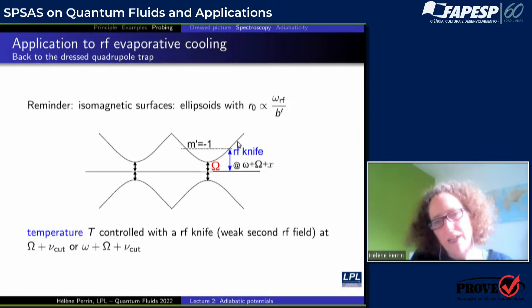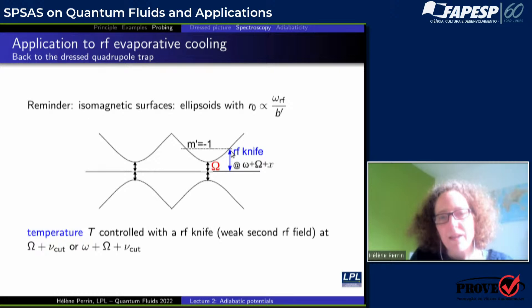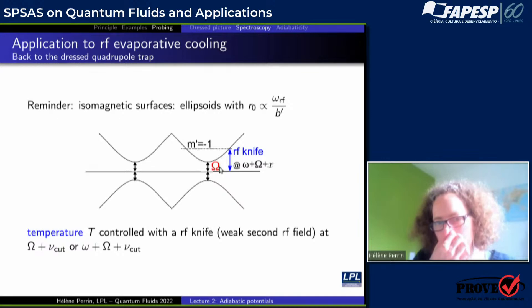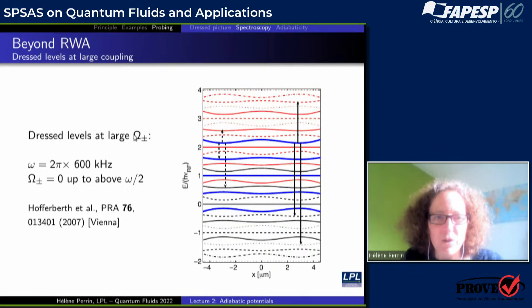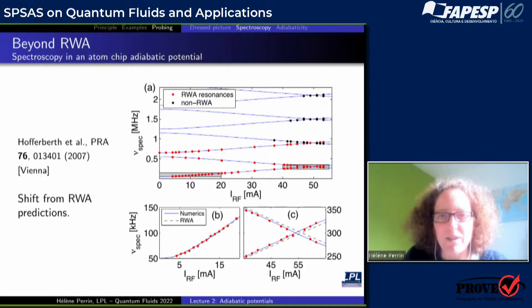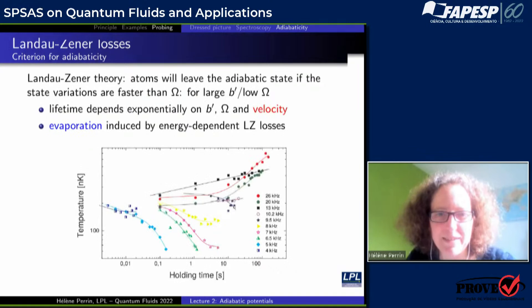With the same kind of RF coupling we can apply an RF knife and control the temperature in the trap — by directly coupling the states between them, we can expel atoms with enough energy and cool down the atoms inside the dressed trap. I will skip the part about when we go to very large RF coupling and the omega_minus coupling between multiplicities cannot be neglected, as studied in the group of Schmiedmayer. I am a bit behind schedule, so I will come to my conclusion.